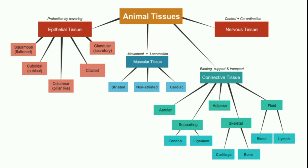Muscular tissue is for movement and locomotion. It is of three types: striated, non-striated, and cardiac. Now let's see connective tissue. Connective tissue is of five types: first is areolar, second is supporting.